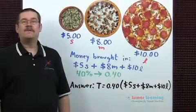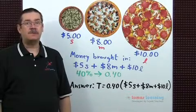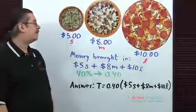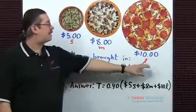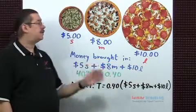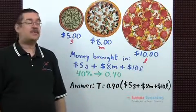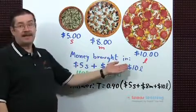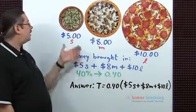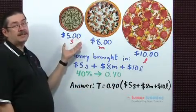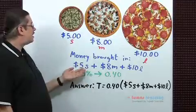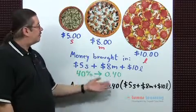To find the equation for the first part, I'm going to let the variables s, m, and L represent the number of small, medium, and large pizzas sold. Next, I want to find an expression that represents the money brought in by the band. To find it, multiply the price of one pizza times the number of pizzas sold: $5 times s plus $8 times m plus $10 times L.